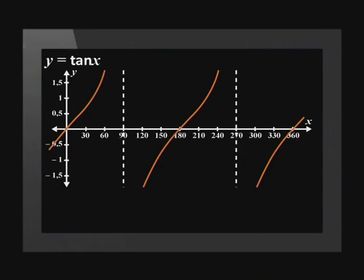The tan graph looks different to the others, so it's important to know the shape, asymptotes, and coordinates. This is what the tan graph looks like.